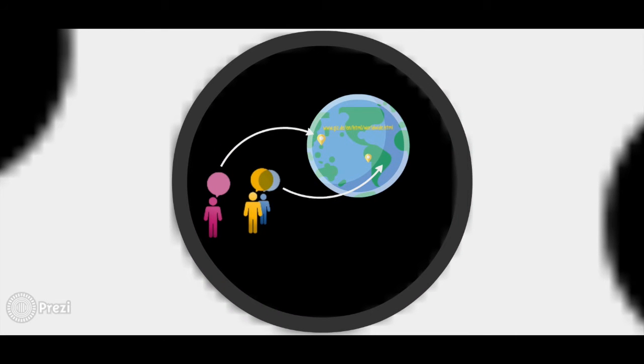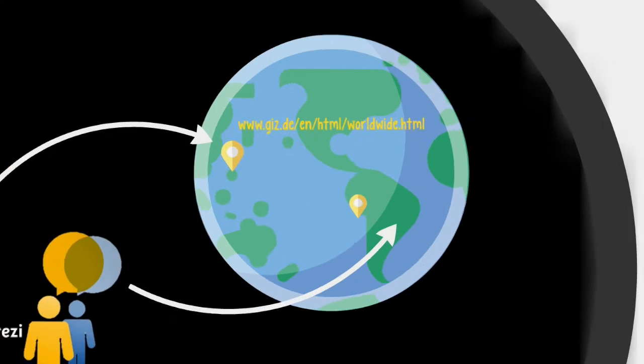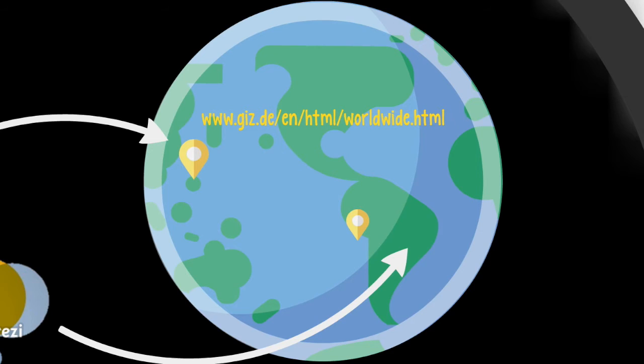Alone or in a team of maximum two persons, the students select a GIZ project they would like to work on. A list of possible projects will be provided by the organizing team. To learn more about GIZ projects, please visit this link.